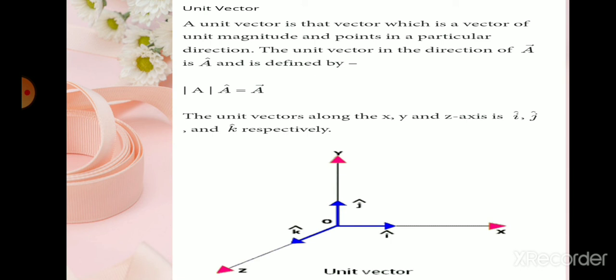Unit vector. A unit vector is that vector which is a vector of unit magnitude and points in a particular direction. The unit vector in the direction of vector A is represented by A cap and it is defined as A cap is equivalent to vector A divided by magnitude or modulus of vector A.